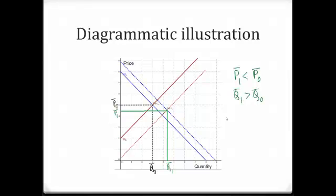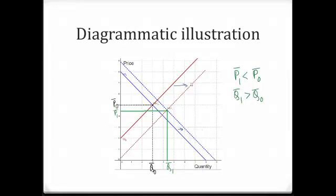Here is our third scenario. This time, the supply factors are far stronger than the demand factors. As a result, the downward pressure on price because of the higher supply more than offsets the upward pressure on price because of the higher demand. Your new equilibrium price, P1 bar, is actually less than the initial equilibrium price, P0 bar. Equilibrium quantity, of course, is higher.